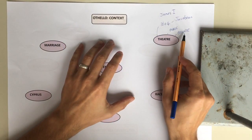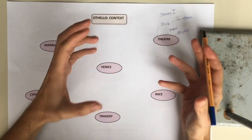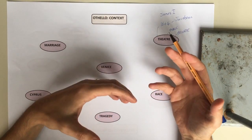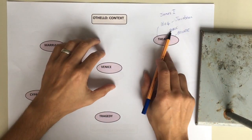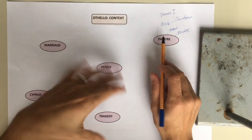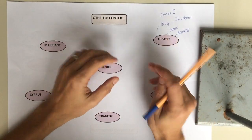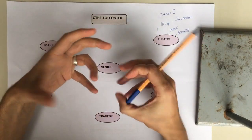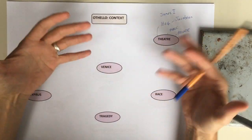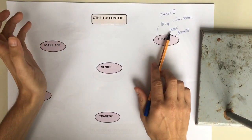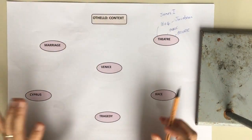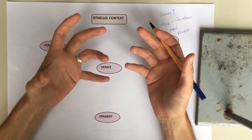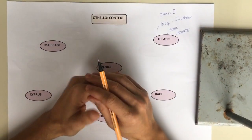But at the same time, on what we call the quarto version of the play, which is like a little pamphlet version published at the time - people used to read plays as well as watching them - it says that it's been performed at public theatres and private theatres, so the Blackfriars and the Globe.